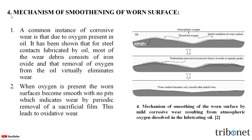Here, let us understand the mechanism of smoothening of the worn surface. This is a common instance of corrosive wear. This is due to the oxygen present in oil.